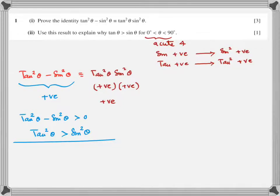This will not be true if it's any other quadrant. The examiner has made it easy: in the first quadrant all the ratios are positive, the squares are positive. The right-hand side is positive, so the left-hand side must also be positive. There is a minus sign — if tan squared equals sine squared it would be zero; if tan squared is less than sine squared it would be negative. The only condition that makes it positive is tan squared greater than sine squared, which means tan theta is greater than sine theta.